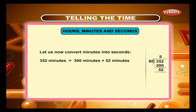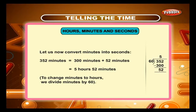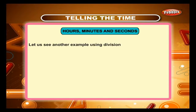Let us now convert minutes into hours. 352 minutes equals 300 minutes plus 52 minutes, which equals 5 hours and 52 minutes. To change minutes to hours, we divide minutes by 60. Let us see another example using division.